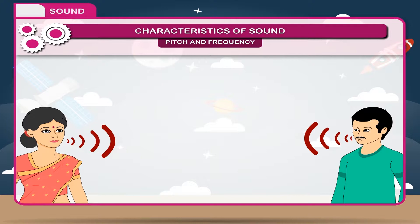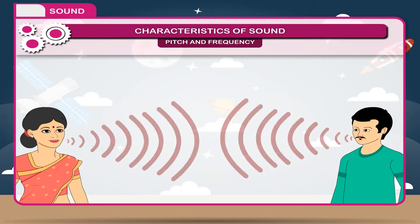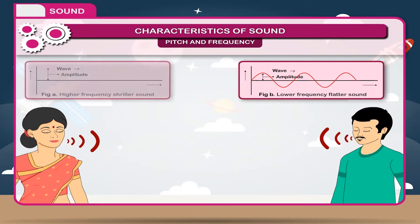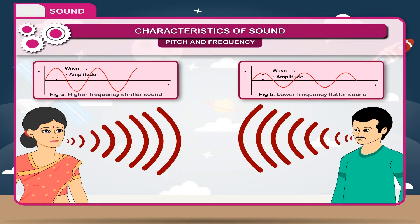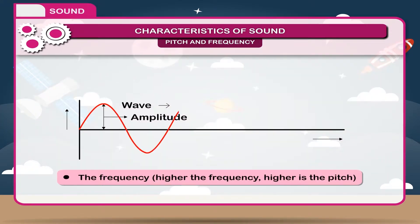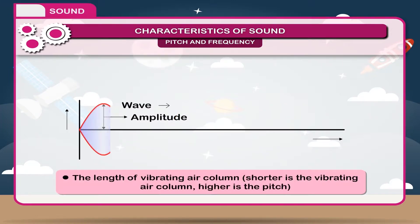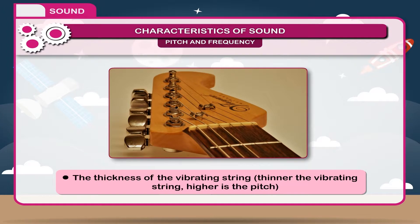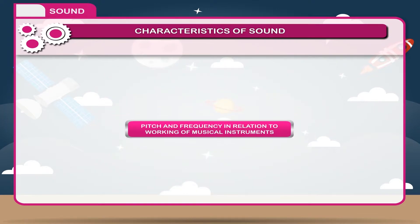On the basis of pitch, we can distinguish between a man's voice and a woman's voice of the same loudness. A man's voice is flat, having low pitch, whereas a woman's voice is shrill, having high pitch. The pitch of sound also depends on the length of the vibrating air column — shorter the vibrating air column, higher is the pitch — and the thickness of the vibrating string — thinner the vibrating string, higher is the pitch.